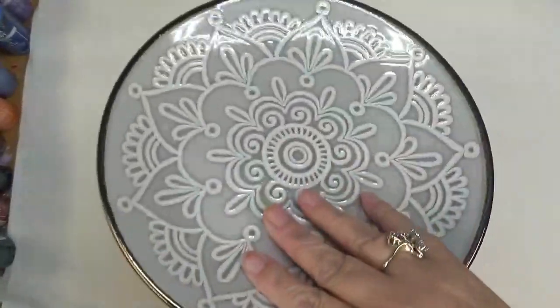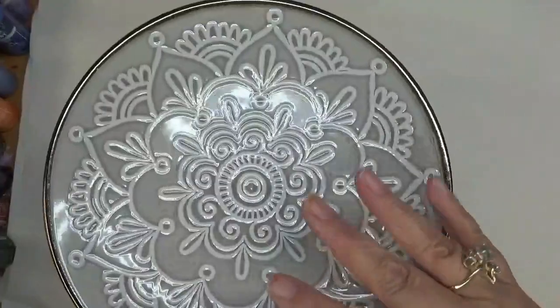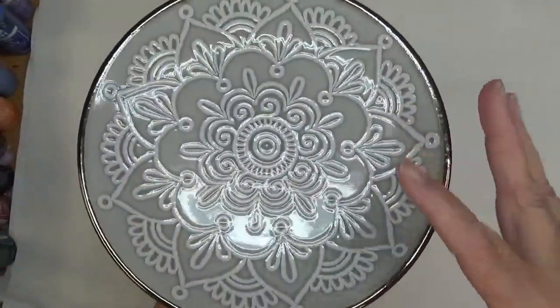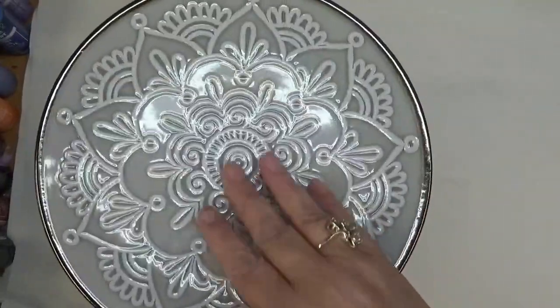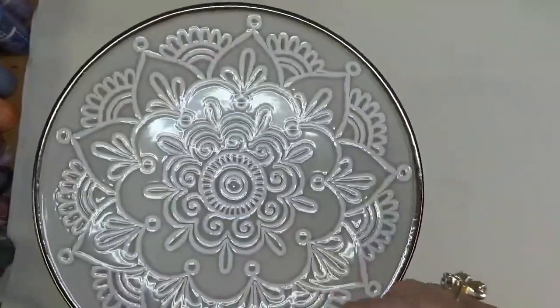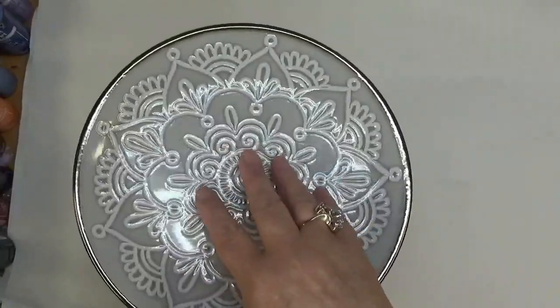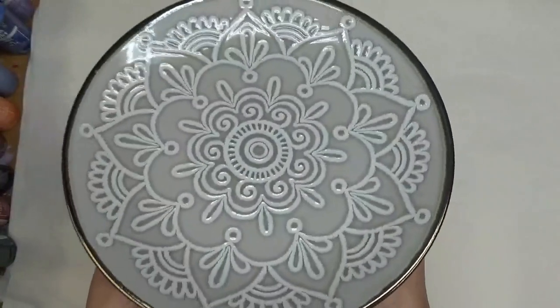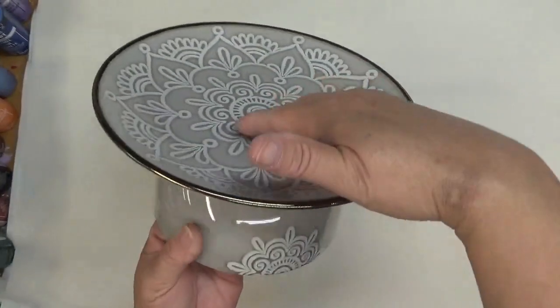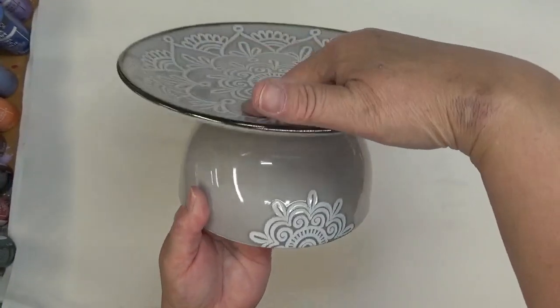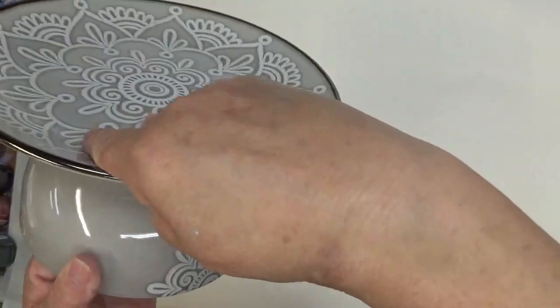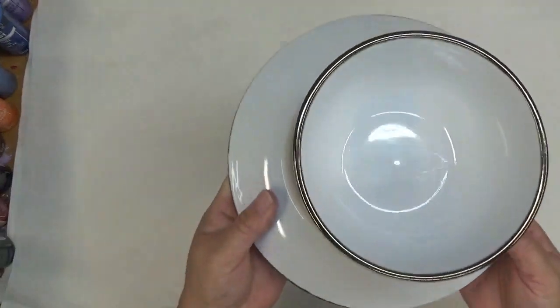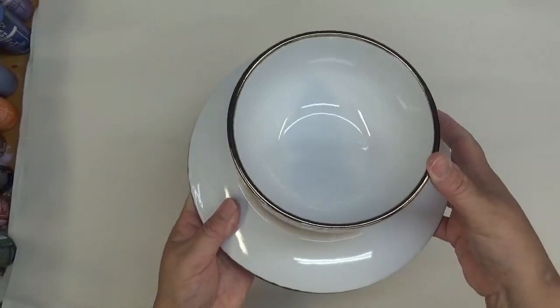You can sit it by your sink to put your sponges and that type of thing on, so it's not sitting on your countertop directly. Then you can wash this, just gently wash it. I would not put it in the dishwasher, but just gently wash it and you're good to go. Just a simple little project, cheap and affordable. Of course, I'm making the bowl slide all over the place, probably not a good thing, so I'm gonna get it where I want it to be and leave it alone.